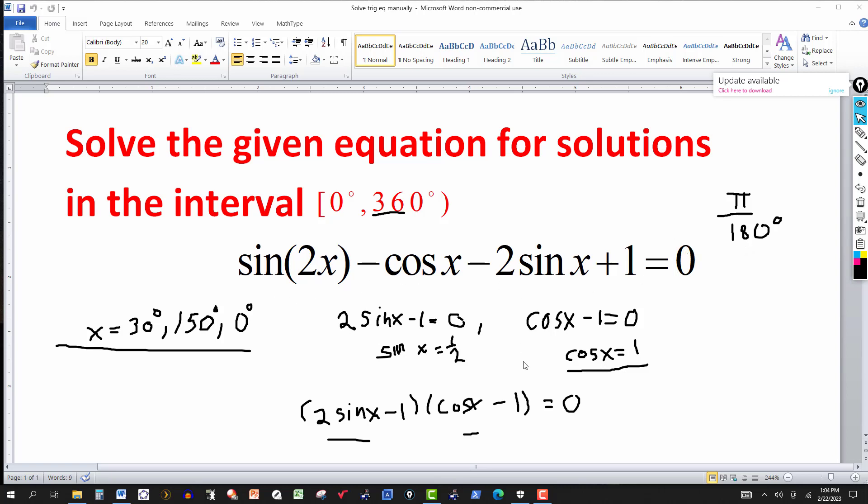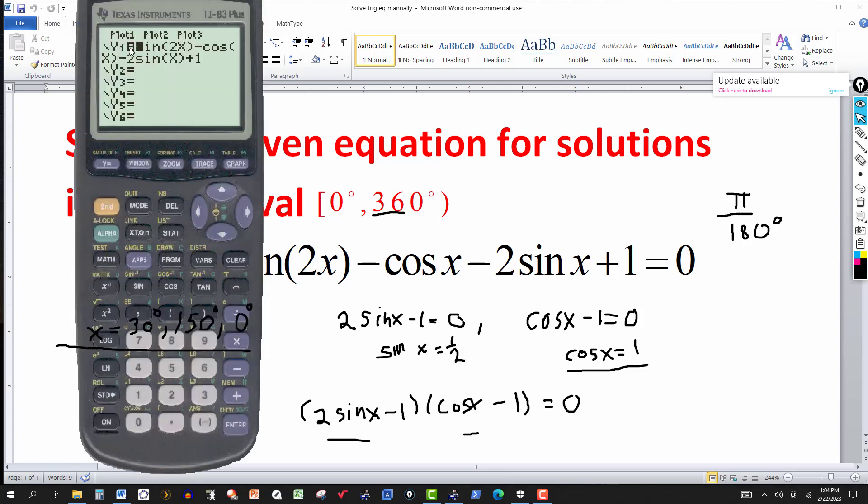And I've done something like this before. I've already entered it. So here I have the function sine of 2x minus cosine of x minus 2 sine x plus 1. So I'm going to graph it. I'm going to go to zoom first here and do a 7z trig.